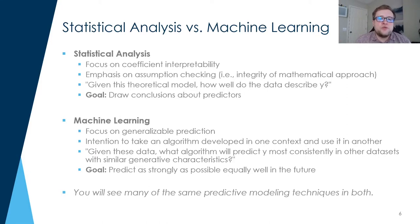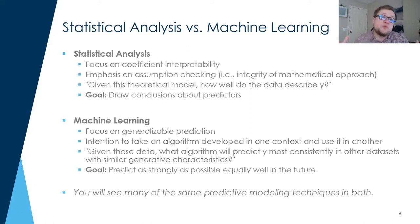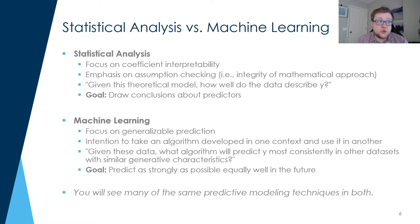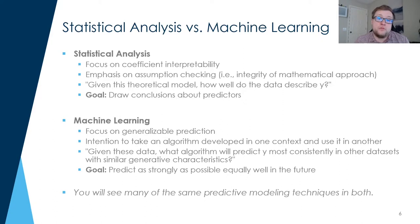That's the basic difference in philosophical approach between the two. In statistics, it's all about individual coefficient interpretability. In machine learning, it's much more about how well does this model perform overall.